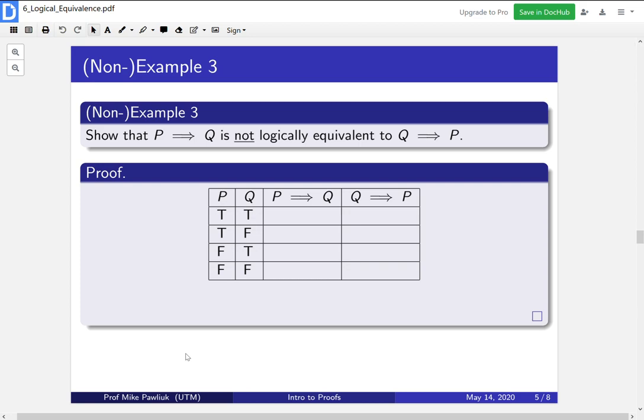Let's look at a non-example. So two things that are not logically equivalent. Let's look at P implies Q and Q implies P. Let's compute their truth values for all the values of P and Q. And let's try to find an example where they don't have the same output. So take a moment to compute this on your own and then see, is there a place where they differ?